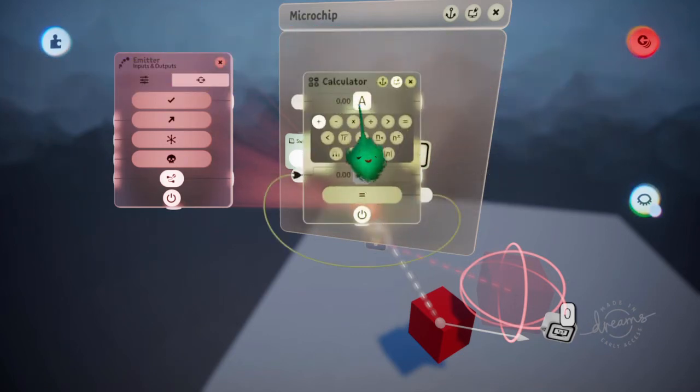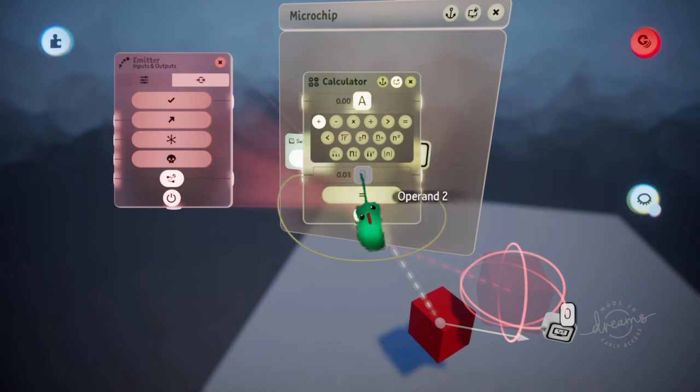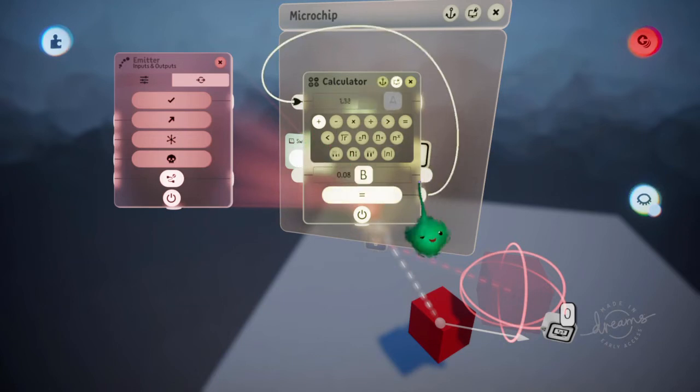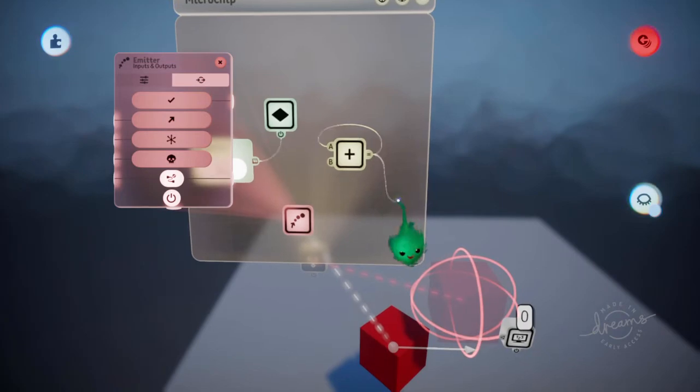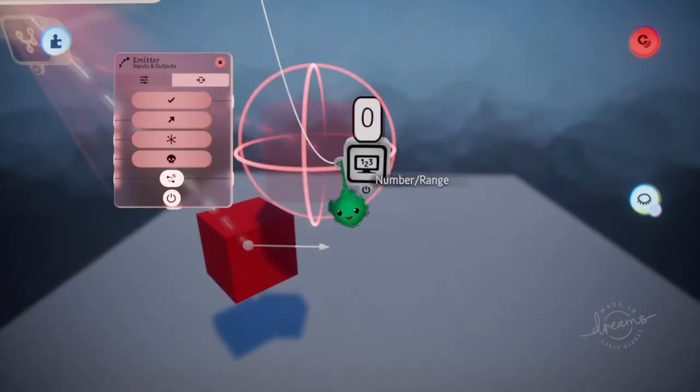I'm going to use a special trick where you put a calculator wire into itself, wire the result into A, and then I'll add this value to it every frame. So then we can just get a different value every frame.